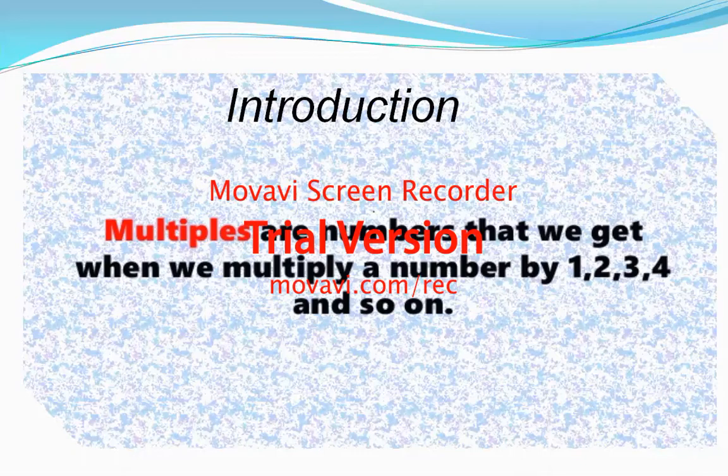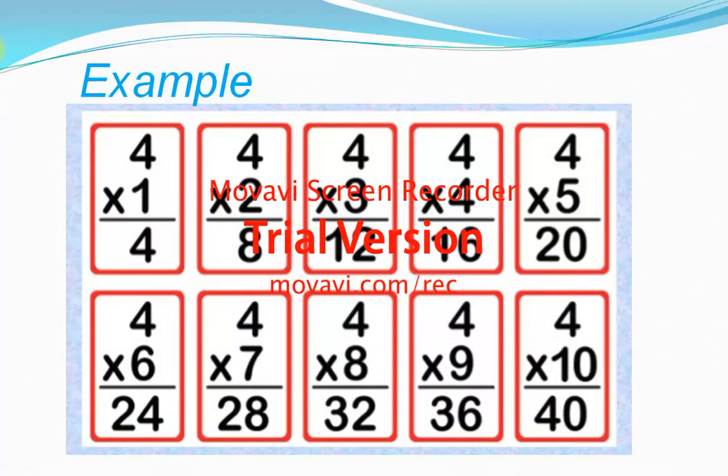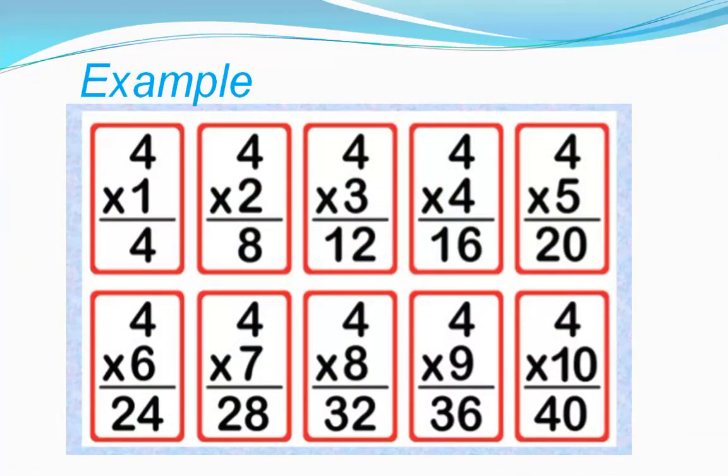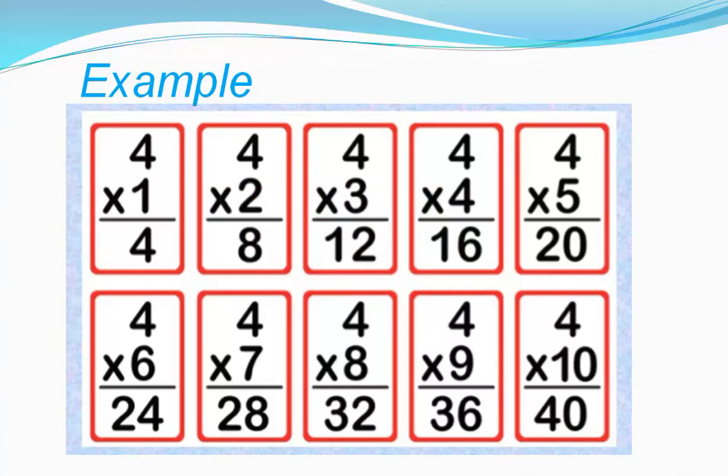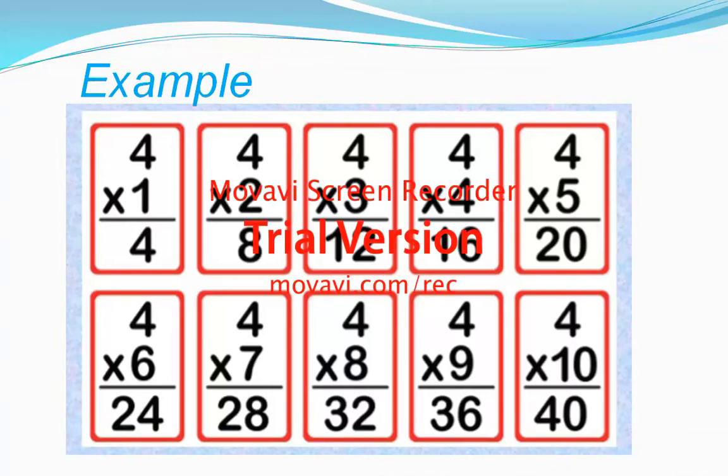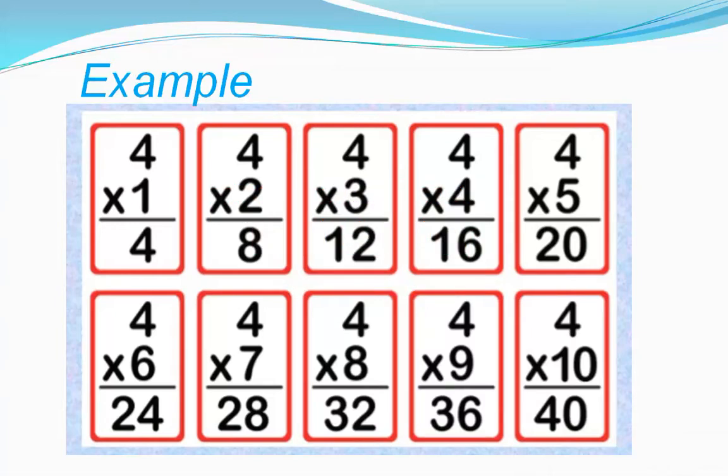For example, four: four ones are four, four twos are eight, four threes are twelve, four fours are sixteen, four fives are twenty. These numbers - four, eight, twelve, sixteen, twenty - are multiples of four.